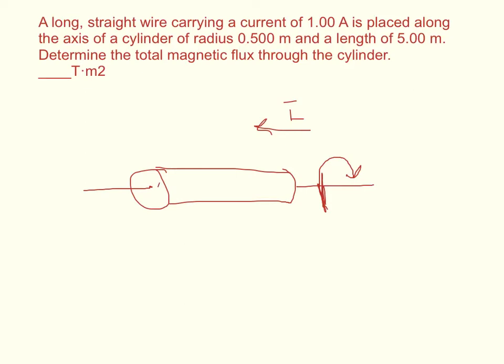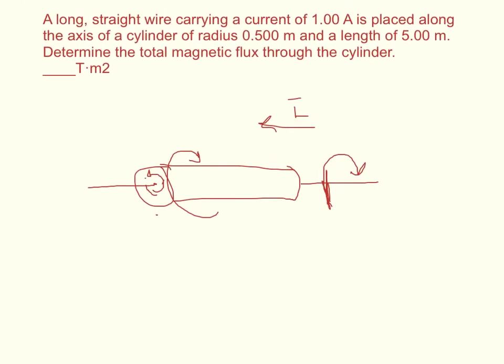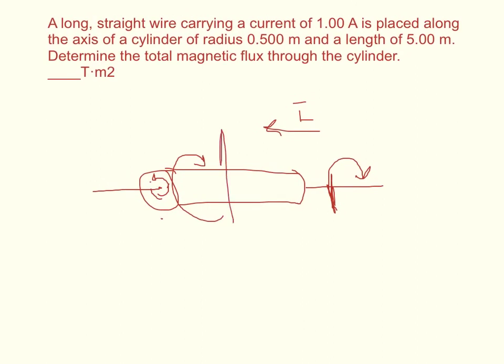But that magnetic field is traveling in a circle. And so you will have components of the magnetic field that are on the outside of this cylinder, and components that are inside of this cylinder. But you will not have any magnetic field going through the cylinder, going from inside to out or anything like that.